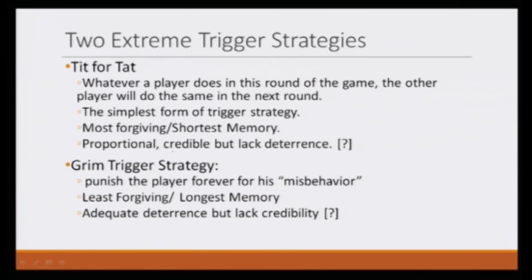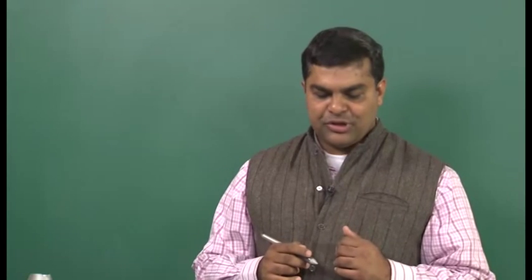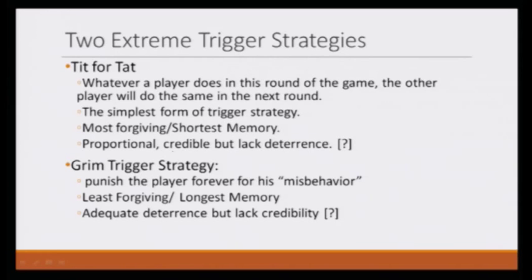As opposed to tit-for-tat, on the other extreme we have the grim trigger strategy. Grim trigger strategy says that the punishment period is forever. If a player misbehaves — if a player defects — then you punish that player forever. This is least forgiving and has the longest memory: once someone defects or misbehaves with you, you keep on punishing that person forever. But remember, in the prisoner's dilemma game, punishing the other player also means punishing yourself. So this is not very credible, because the player would be not only punishing the other player but also himself. But this has adequate deterrence in the sense that it would deter the other player from cheating.